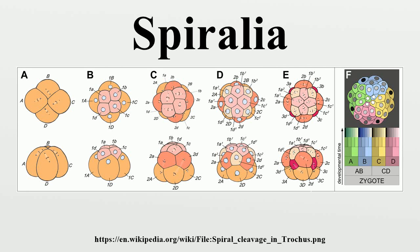The Spiralia are a morphologically diverse clade of animals, including within their number mollusks, annelids, platyhelminths and other phyla. The Spiralian clade of animals are more commonly referred to as the Lophotrochozoa, although whether these two terms are equivalent is debated, as noted further below.